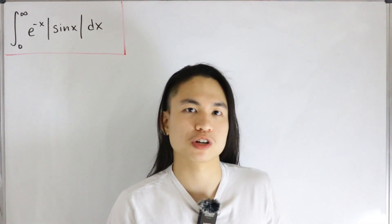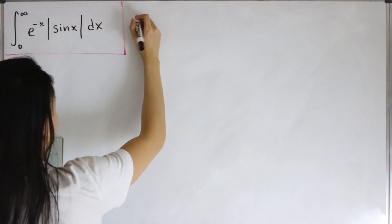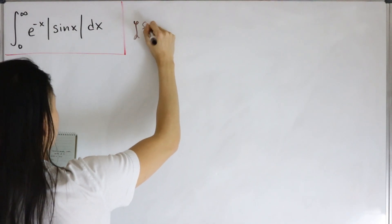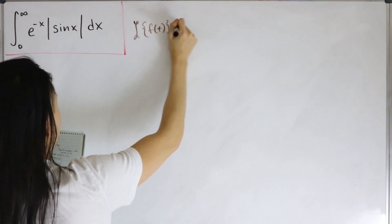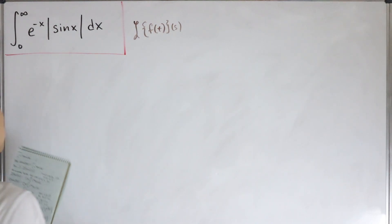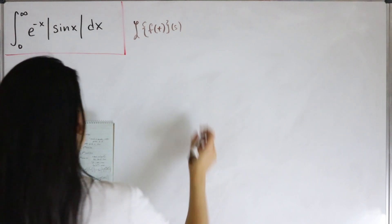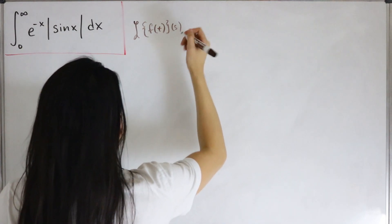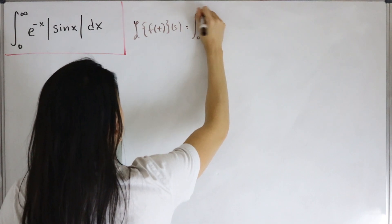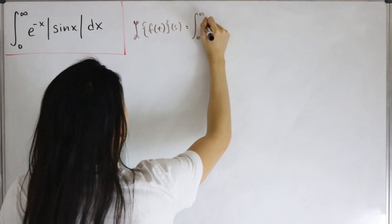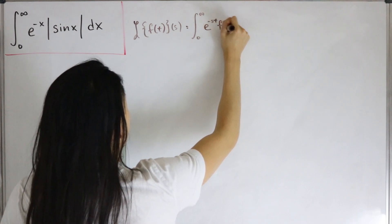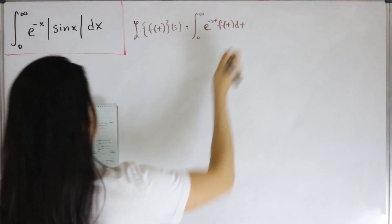With that out of the way, let's shift right in. The definition of the Laplace transform: f of t evaluated at s, where t is the time variable and s is in the complex frequency domain, is equal to the integral from zero to infinity of e to the power negative s times t, multiplied by f of t, then dt.